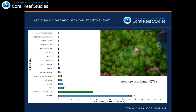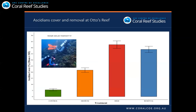The perspective was completely different when we checked ascidian cover at Otto's Reef. In this case, corals are still the most dominant category, but ascidians represent 27% of the substratum and are the second most important category. This complete change could indicate a shift from a coral-dominated environment towards an ascidian-dominated environment, giving us the opportunity to test the influence of ascidian cover on reef-associated fishes.